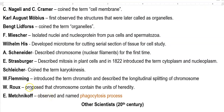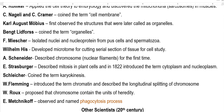The next scientist is Rouse. He proposed that chromosomes contain units of heredity — that is, genes and other elements are present in the chromosome. That is the finding of Rouse. He is the last scientist discussed under the 19th century.